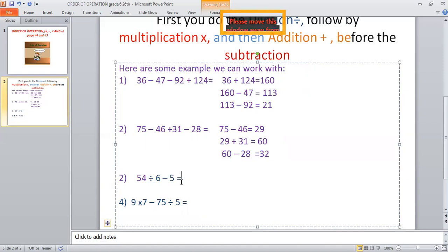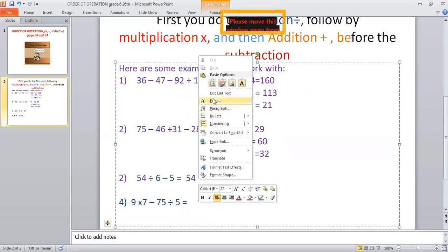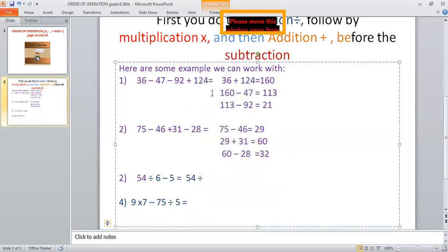There is division. So you start with division. 54 divided by 6, this is going to be 9. And then we make 9 minus 5. Your final answer is going to be 4.